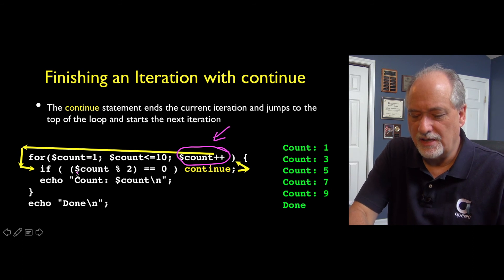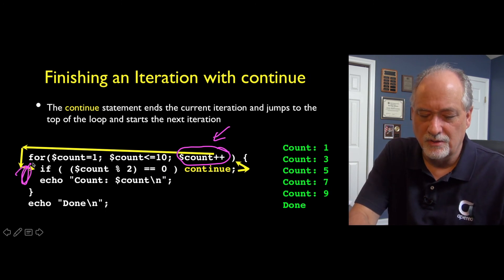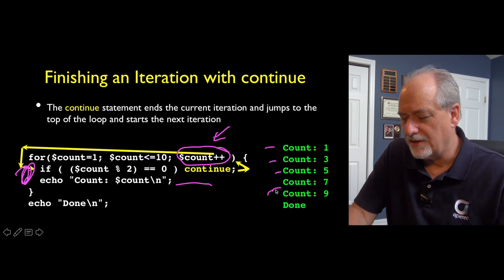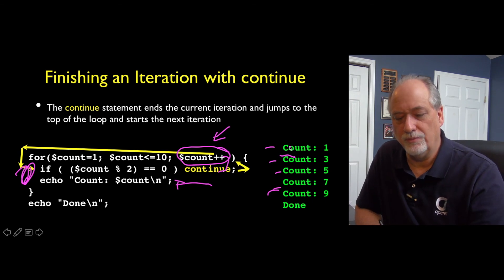This is basically saying if it's even, divide by two, look at the remainder, continue. So it's going to run this ten times, but it's only going to run this five times on the odd ones. Count one, three, five, seven, nine. So the even ones ran, they just ran the continue. So it just went up, and so it didn't print this. That didn't happen on the even iterations through the loop.